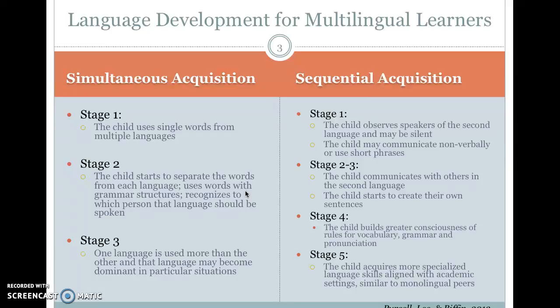As you continue learning a language, you'll build greater consciousness of rules for vocabulary, grammar, and pronunciation — more details in communication. And then finally, you'll be able to use specialized language skills aligned with academic settings, similar to your monolingual peers. Think of us — if we all went to Finland, we would be learning communication first before we'd be ready for a university class in Finnish, because there would be a lot more specialized language.